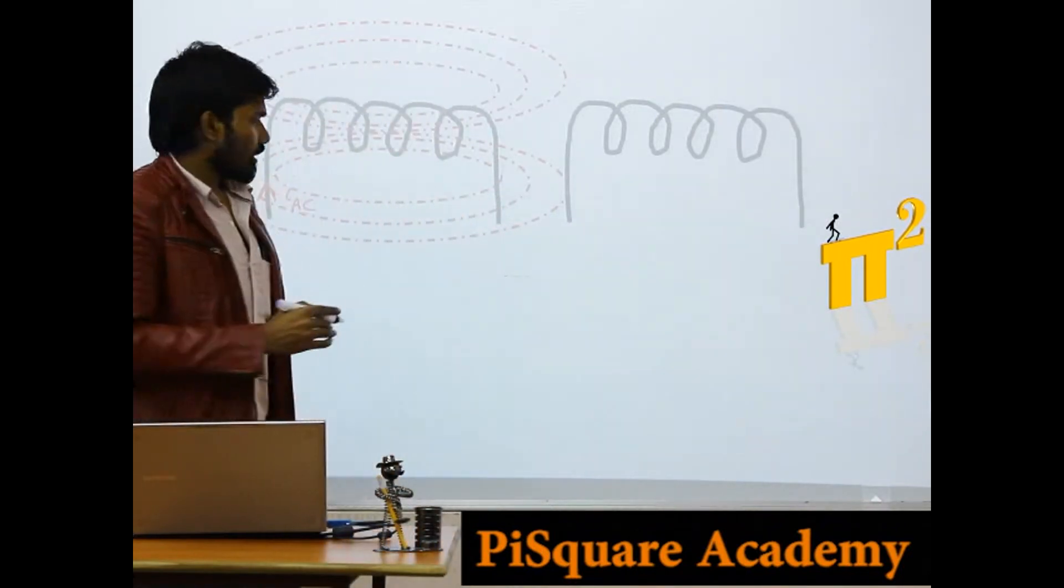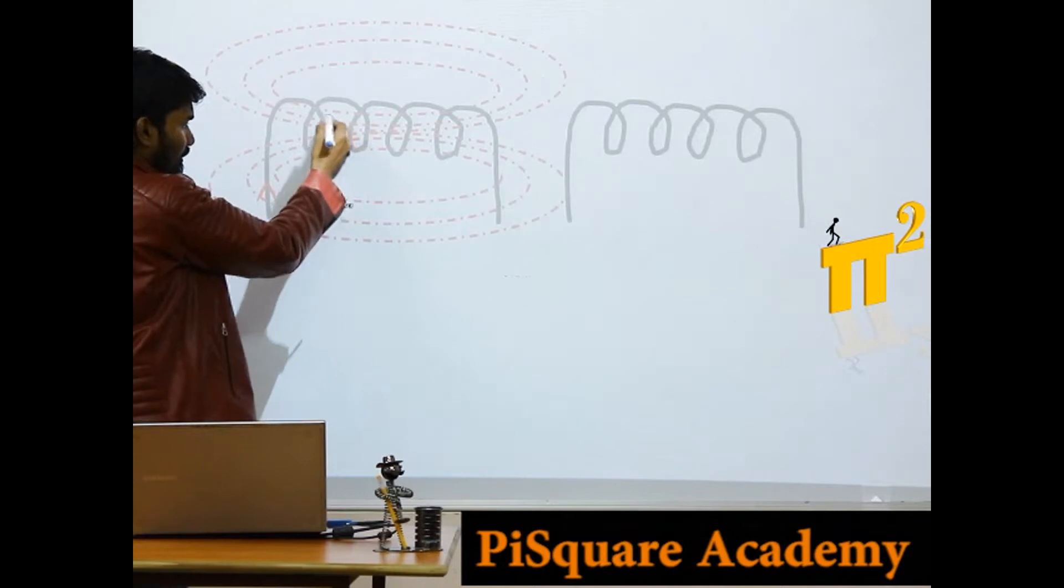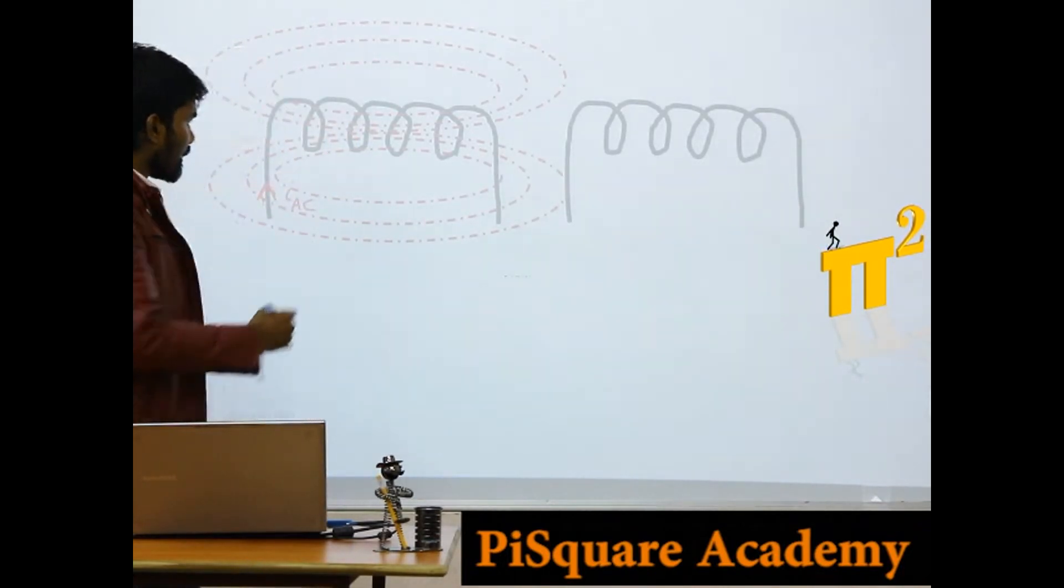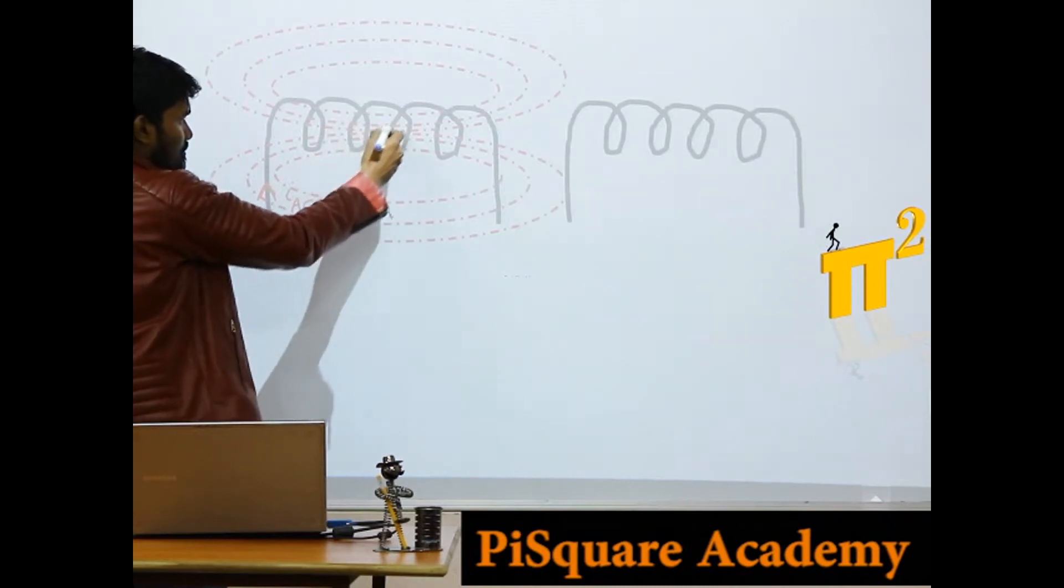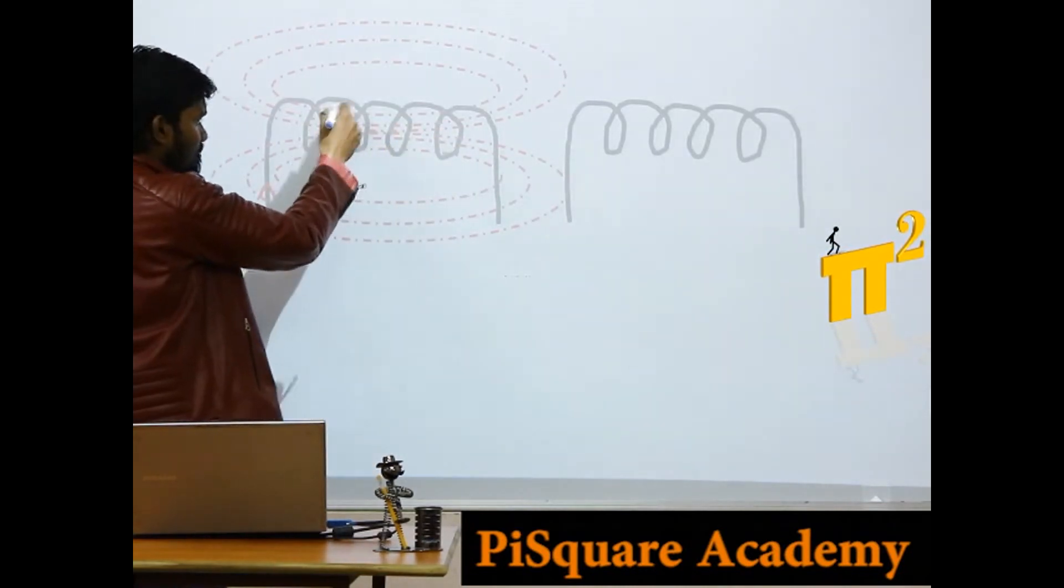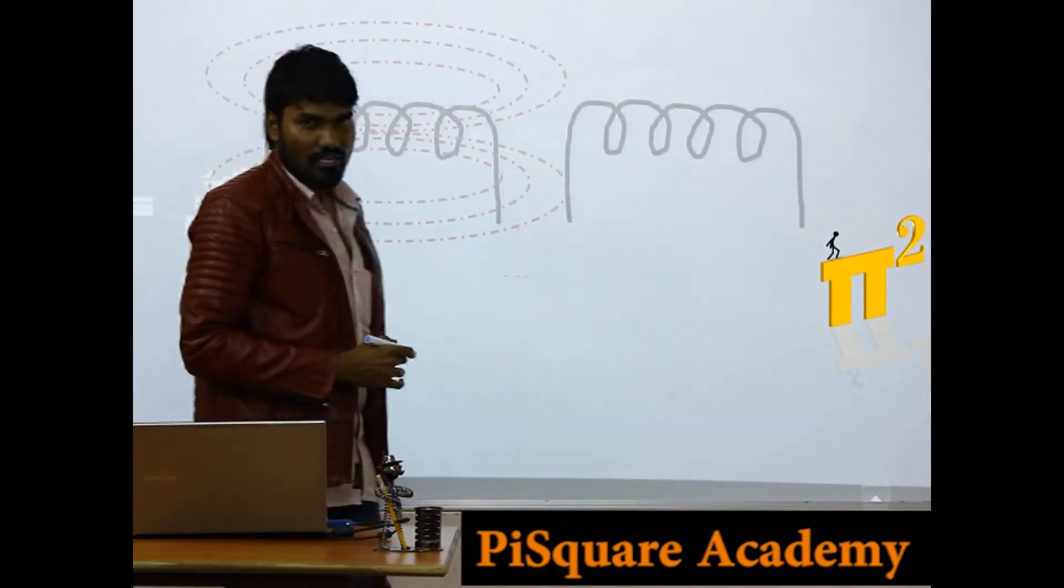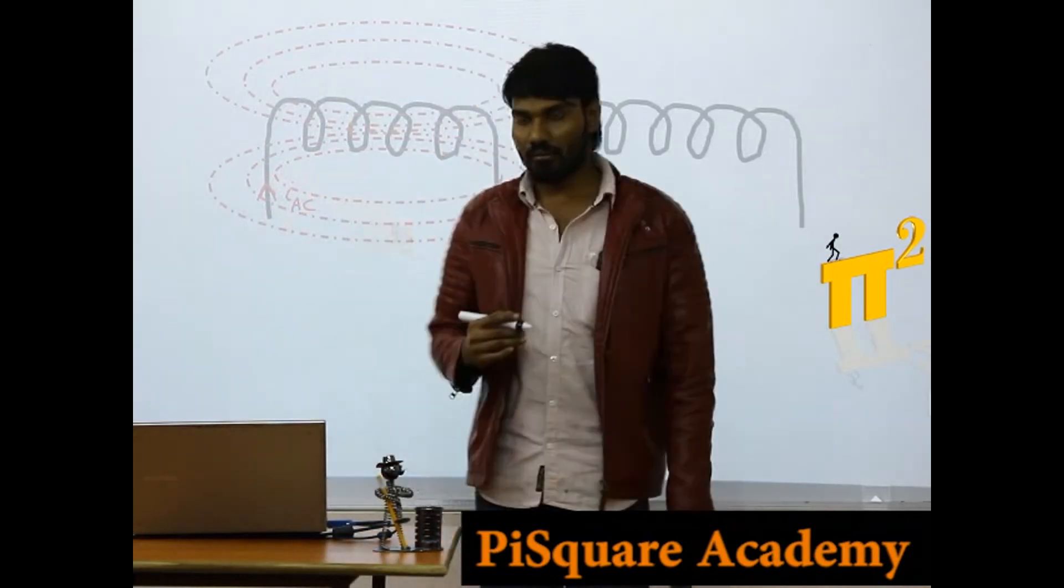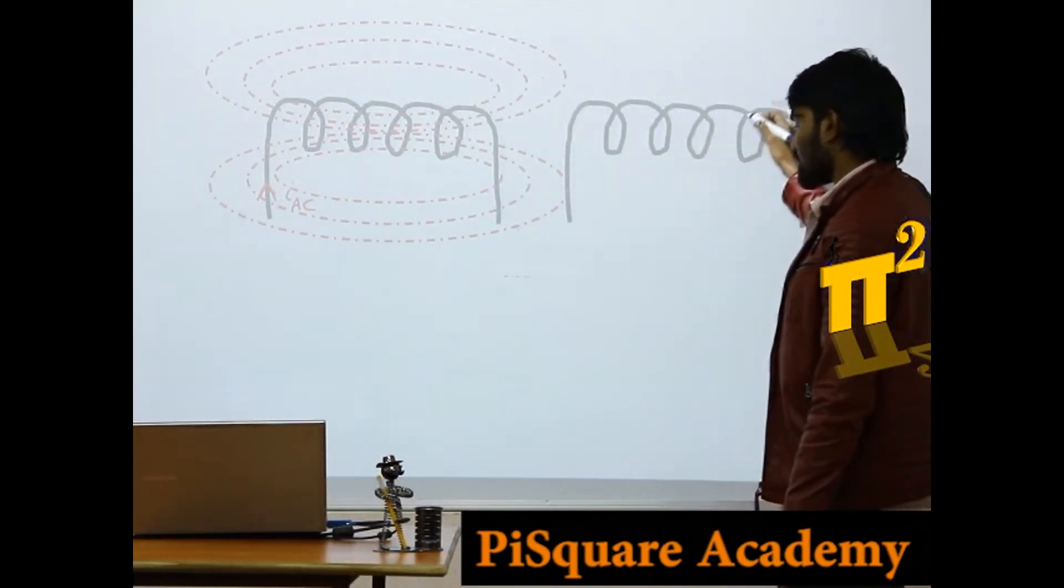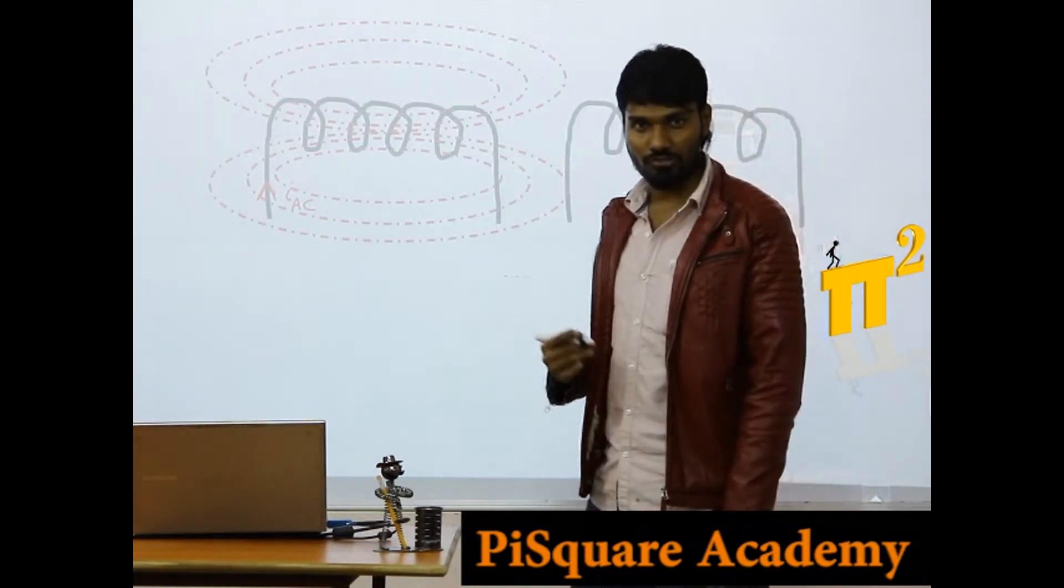Now if you want to name the induced EMF in this conductor is called as self induced EMF, because EMF induced in these conductors or in these turns is because of its own flux, hence it is called as self induced EMF. The EMF induced in this conductor or in these turns will call it as mutual induced EMF.